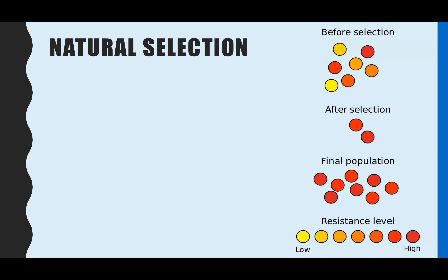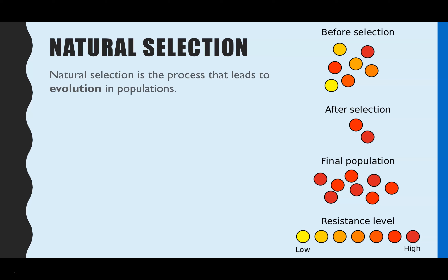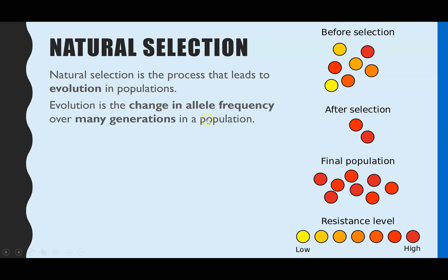Natural selection is something you should be familiar with from GCSE but it goes into a bit more detail here. The first thing is knowing that natural selection is a process and the end result is evolution. Evolution is the change in allele frequency over many generations in that population. We've got an example here representing antibiotic resistance in bacteria — the different colours represent the level of resistance. After selection we now only have two different alleles, and over many generations those two alleles are in a different proportion to originally, so we've had this change in allele frequency.